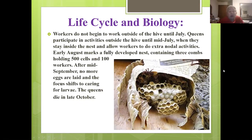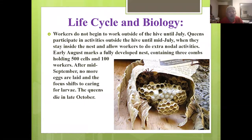Workers begin working outside the nest about the hive in July. Queens participate in outside activities until mid-July, then stay in the nest and allow workers to do the other duties. By early August, a fully developed nest contains three combs holding 500 cells and around 100 workers. After mid-September, no more eggs are laid and the focus shifts to caring for the young larvae. The queens die in October.